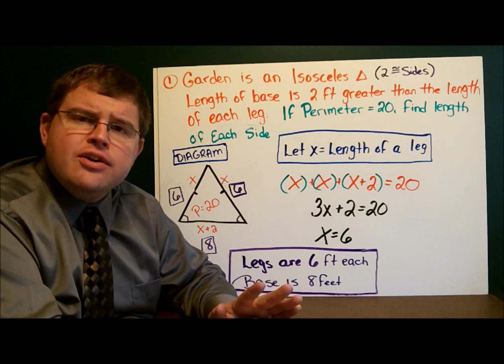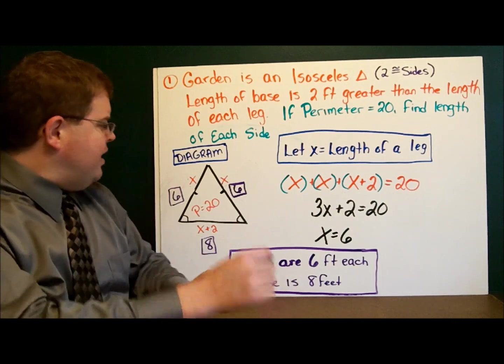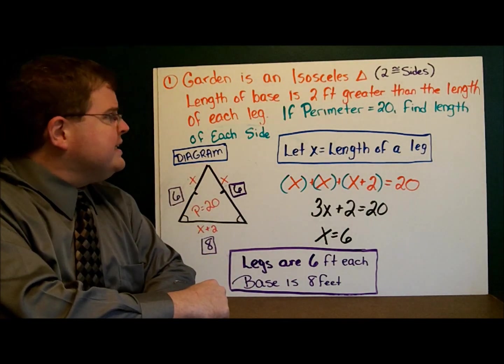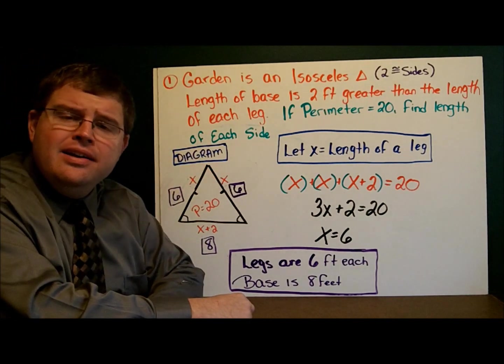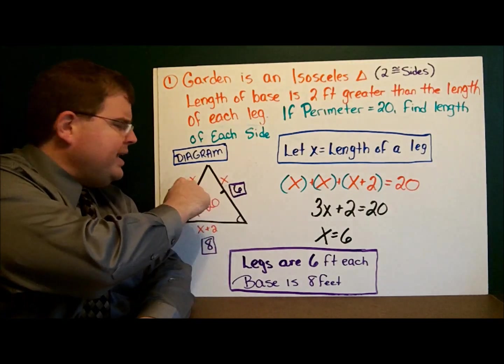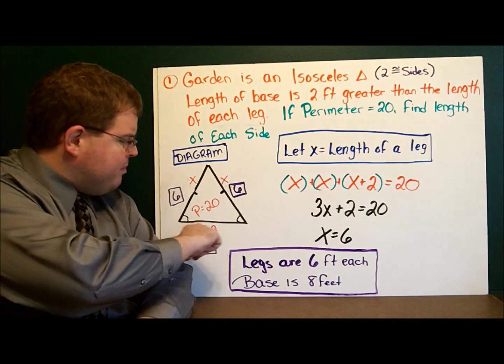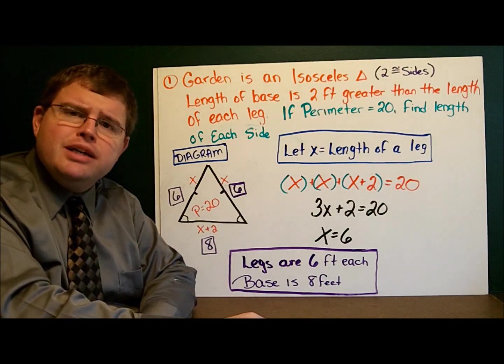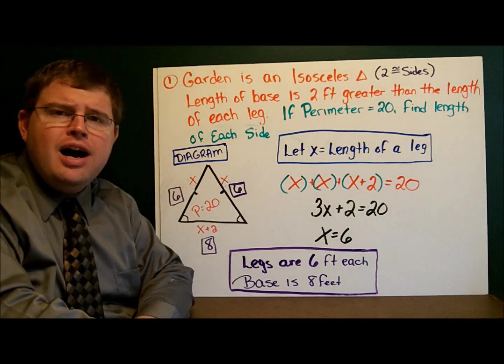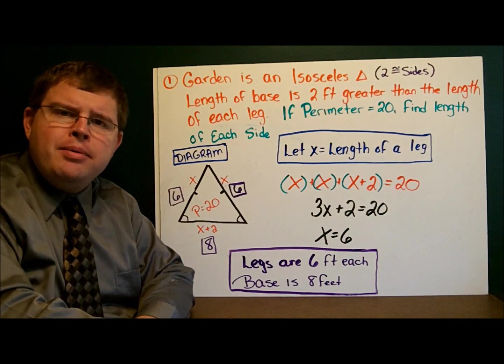The best thing you can do to start these problems, and I recommend always doing this, is draw a picture. I've drawn a picture of my triangle right here. And it says that the length of the leg, the two congruent sides, I know nothing about it. So I called them each x. The base was two more than a leg, and so the base I said was x plus two. And I usually write the other piece of information, the perimeter, on the inside. That way it's just handy and it's nicely organized.